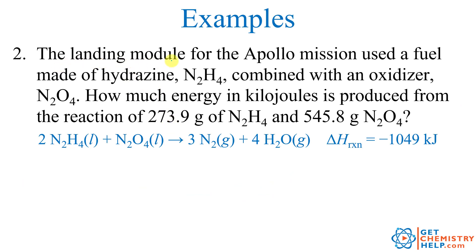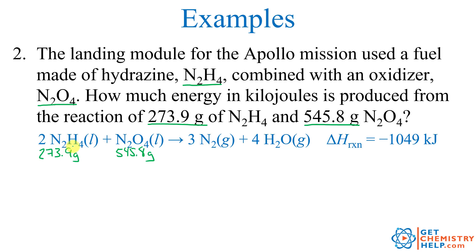The landing module for the Apollo mission used a fuel of hydrazine, N2H4, combined with an oxidizer, N2O4 (dinitrogen tetraoxide). How much energy in kilojoules is produced from 273.9 grams of hydrazine and 545.8 grams of dinitrogen tetraoxide? Since we have two different reactants, this is a limiting reactant problem — we need to solve it twice and choose the smallest result.